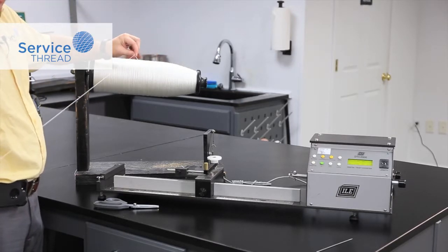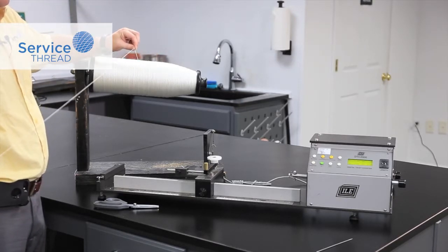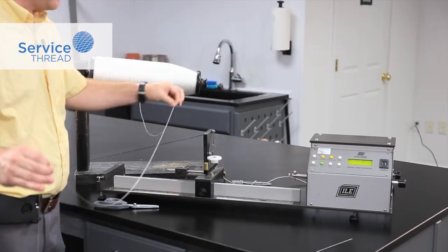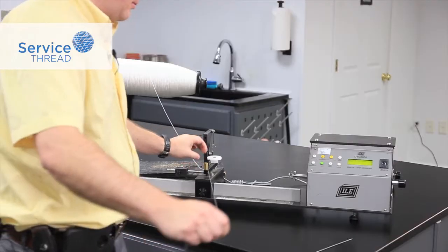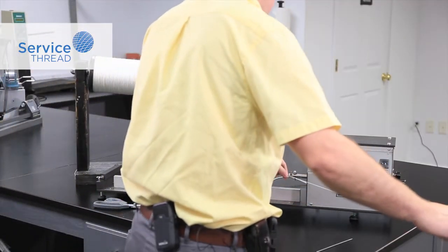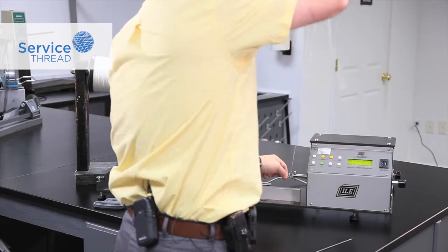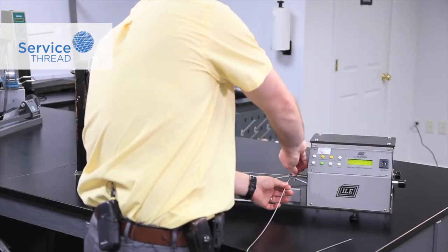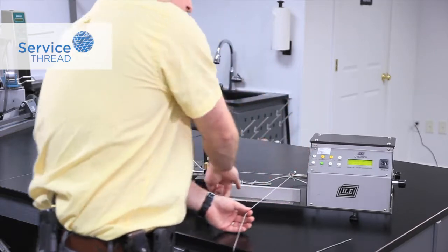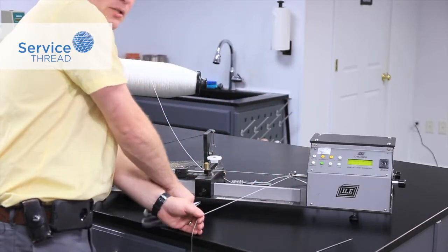And we're going to secure the yarn in two points to make sure we capture that twist in between. We'll load the yarn in the first clamp and now the second clamp, setting up a 10 inch length of yarn to test.